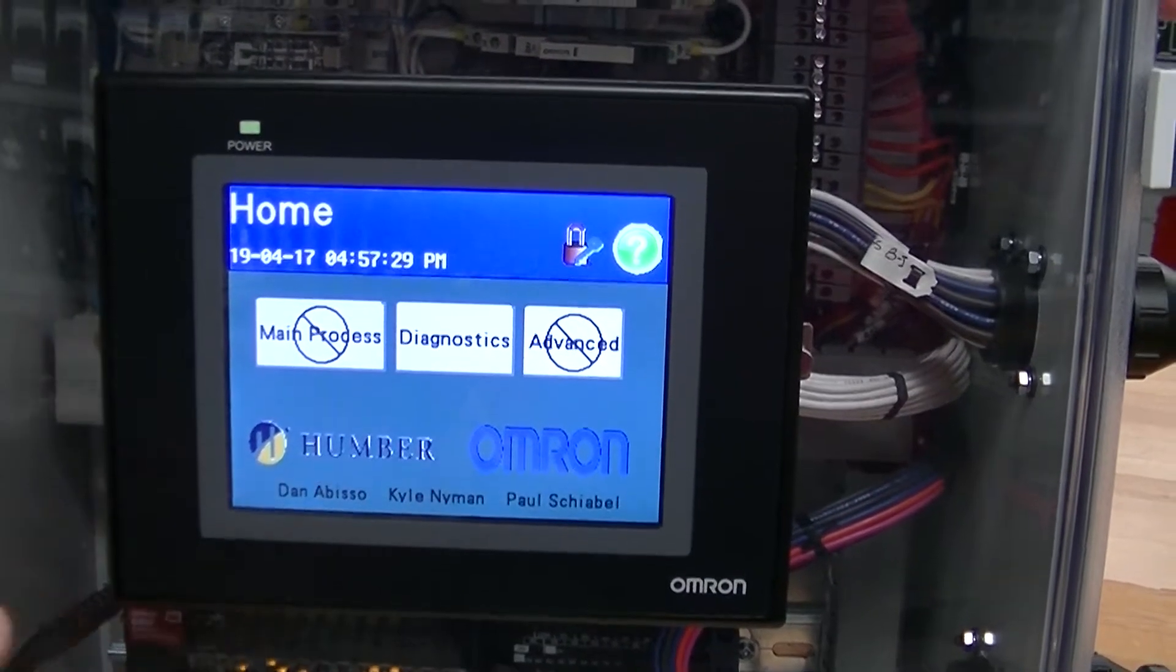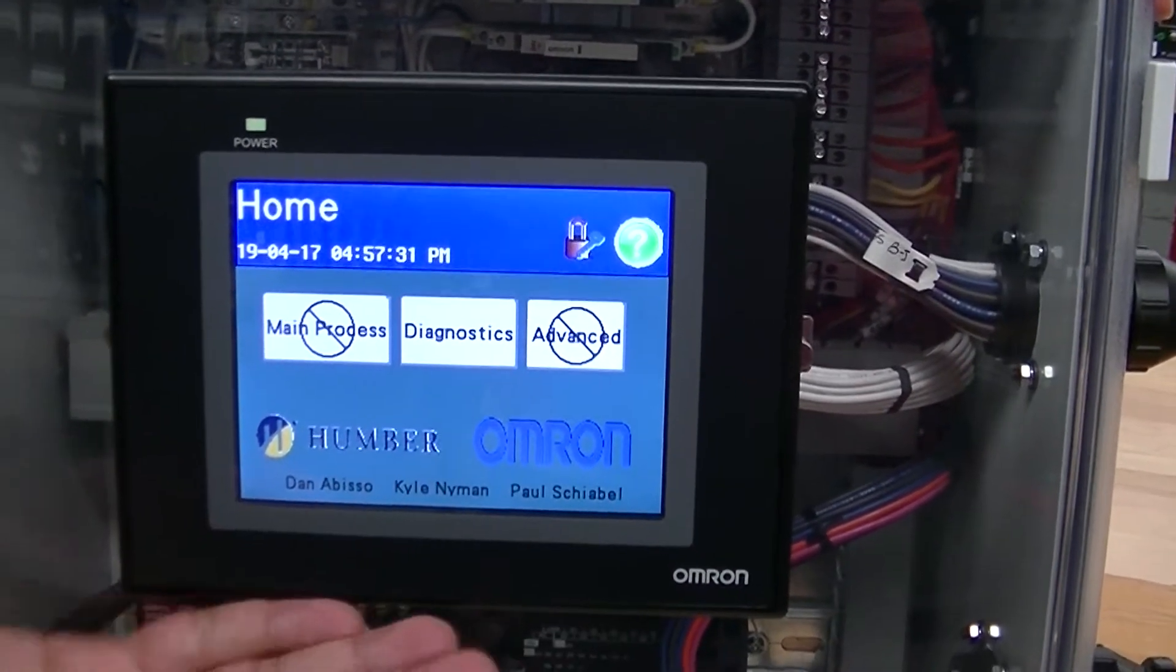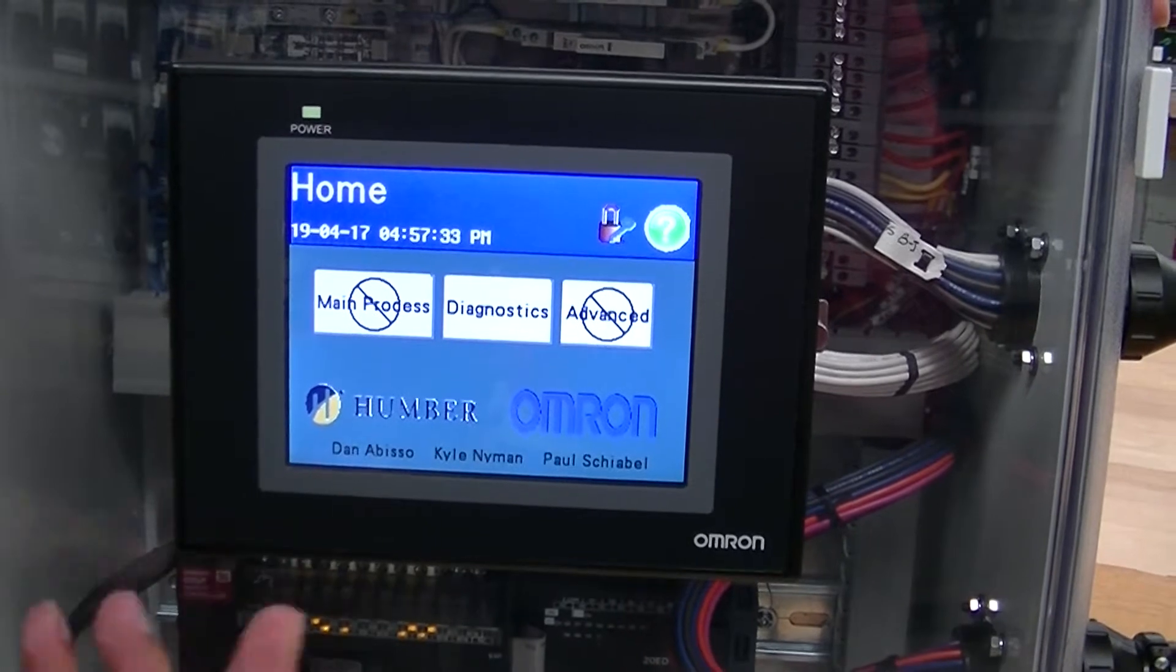In the middle, we have a motor which is simulating our dangerous objects which we are trying to protect. Once the device is powered on, you get this home screen here.